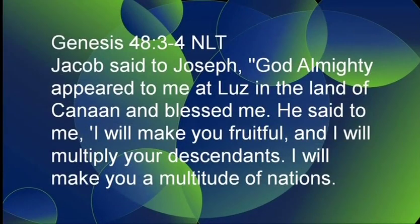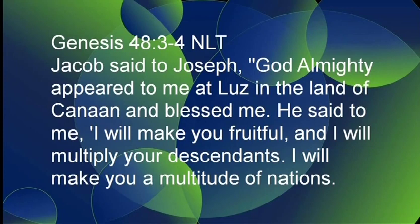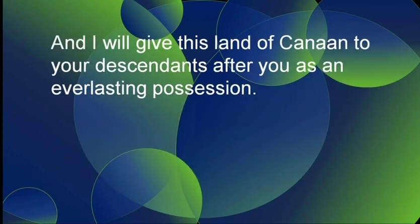Look at verses 3 and 4. Jacob said to Joseph, 'God Almighty appeared to me at Luz' — which is Bethel — 'in the land of Canaan, and he blessed me. He said to me: I will make you fruitful and I will multiply your descendants. I will make you a multitude of nations, and I will give this land of Canaan to your descendants after you as an everlasting possession.' When Joseph arrived, Jacob sat up in his bed and in preparation for what he was about to do, he began reminding Joseph of what God had promised him at Bethel.